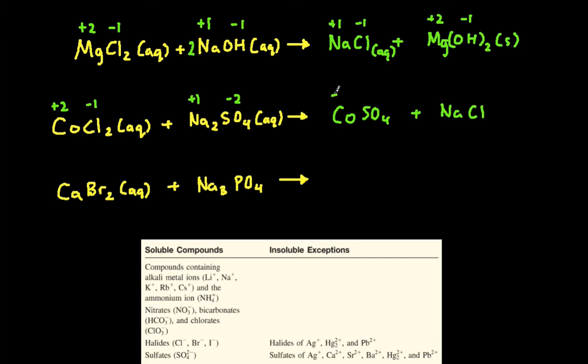Next, we transfer the charges over. Copper is positive 2. Sulfate is negative 2, so these cancel each other out. That compound is neutral. Next, sodium is positive 1, and chlorine is negative 1. So that's also neutral. So we're done there.